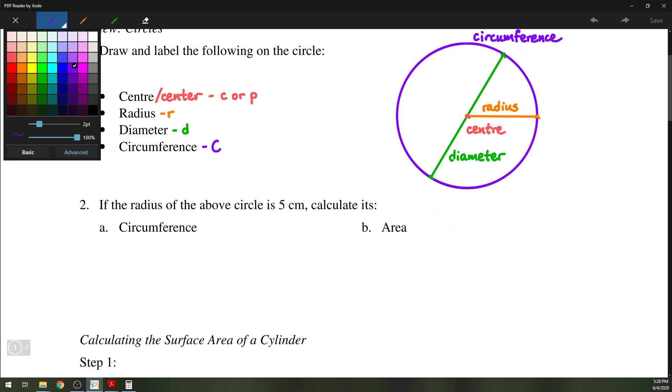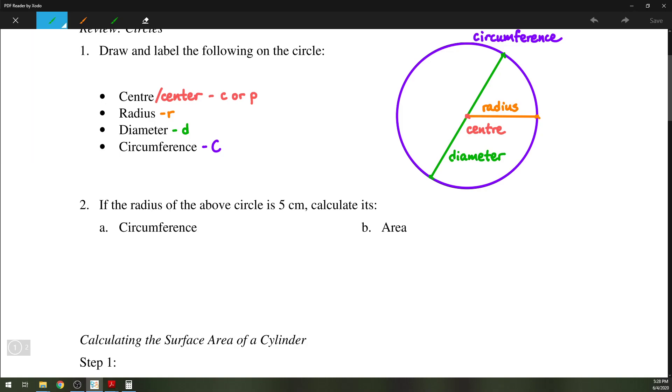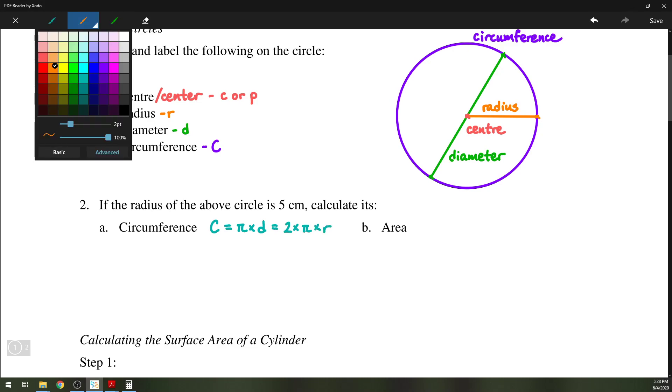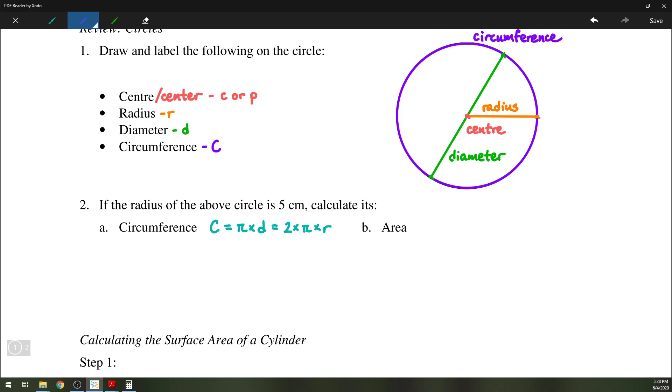Next up we have a couple of familiar formulas. First one is for the circumference of a circle, we have C equals pi times D or 2 times pi times R. And that's because, of course, as you may know, the diameter is equal to 2 times the length of the radius.